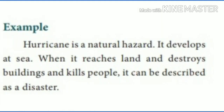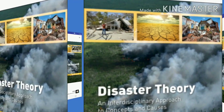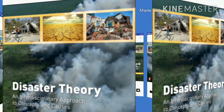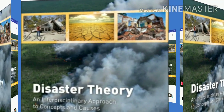For example, a hurricane is a natural hazard. It develops at sea, and when it reaches land and destroys buildings and kills people, it can be described as a disaster.